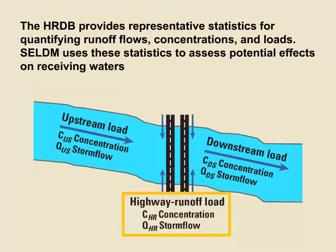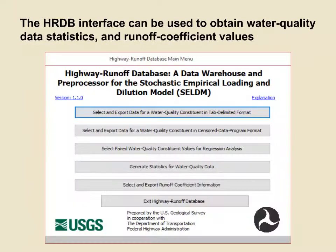The Highway Runoff Database provides representative statistics for quantifying runoff flows, concentrations, and loads. This is a schematic diagram showing the components of the stochastic mass balance analysis used by SELDOM to assess the potential effects of runoff on receiving waters. The Highway Runoff Database provides the information needed to simulate the highway runoff contribution to the receiving waters. It can be used to obtain water quality data, water quality statistics, and runoff coefficient values. This image shows the main menu of the Highway Runoff Database that provides these options.